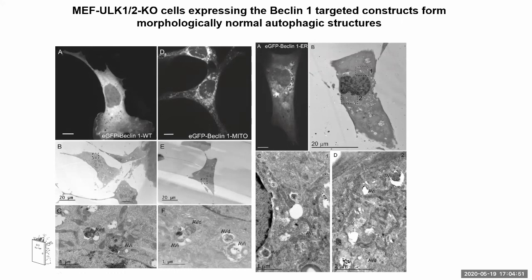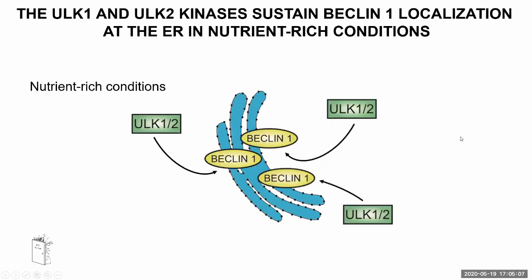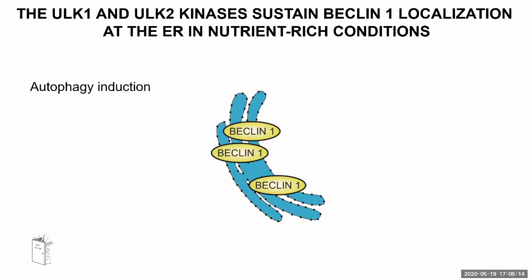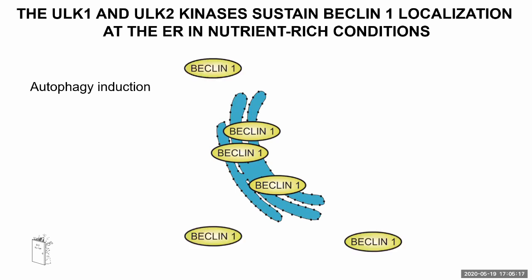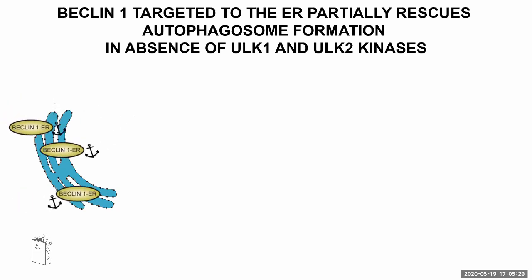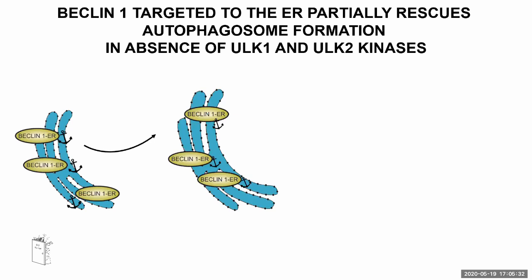To summarize: under nutrient-rich conditions, we were able to show that the ULK kinases help sustain Beclin-1 localization at the ER. Under starvation, when autophagy is induced, Beclin-1 was found to be enriched in the ER. More importantly, in the absence of ULK1 and ULK2 kinases, force-targeting of Beclin-1 to the ER was able to recruit Beclin-1 binding partners such as the kinases VPS15, VPS34, and ATG14.